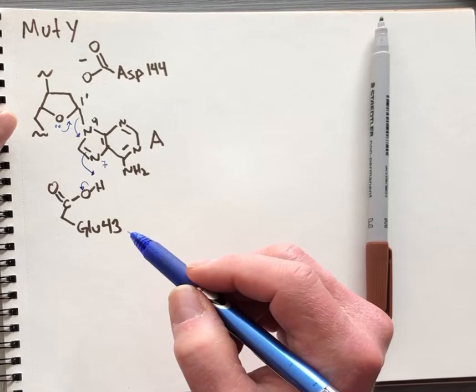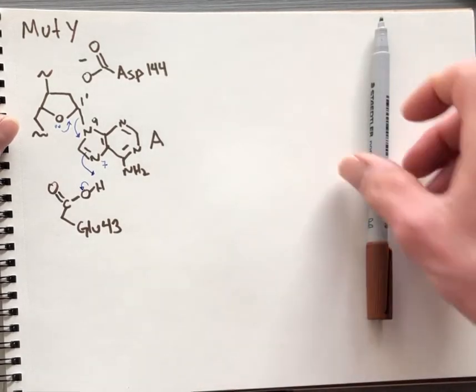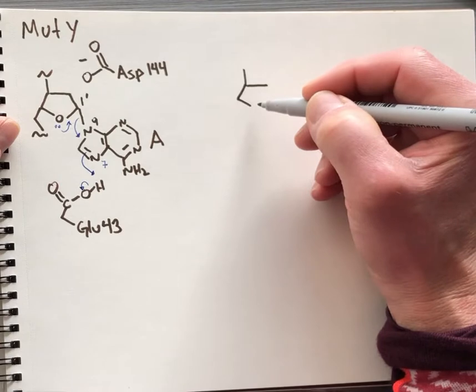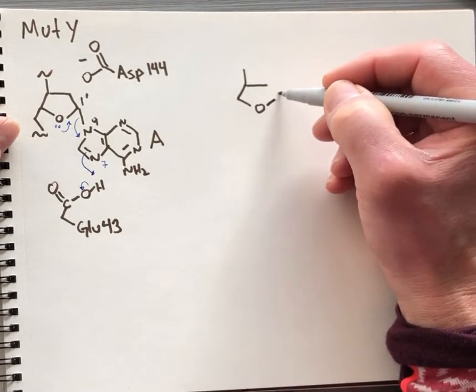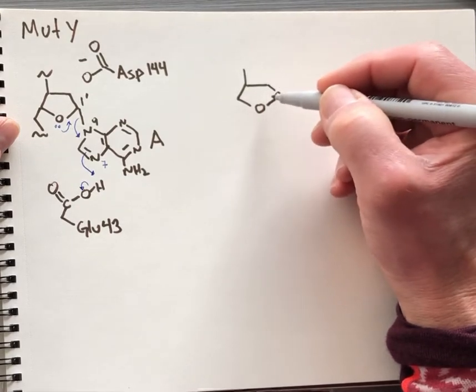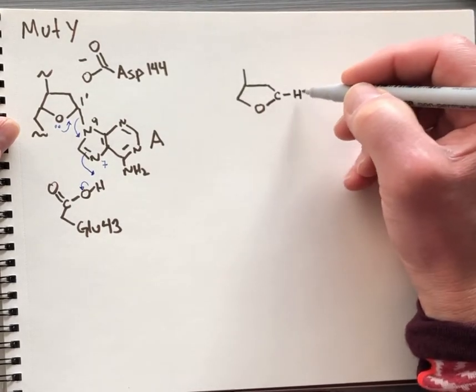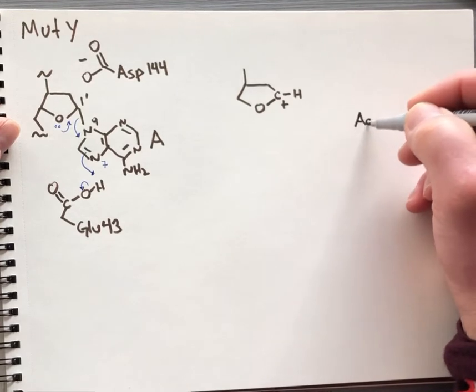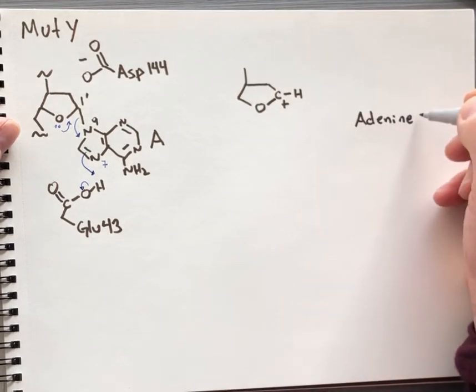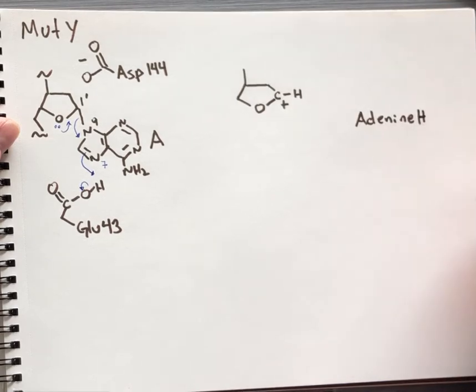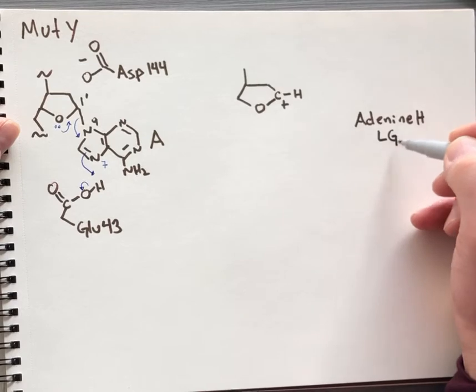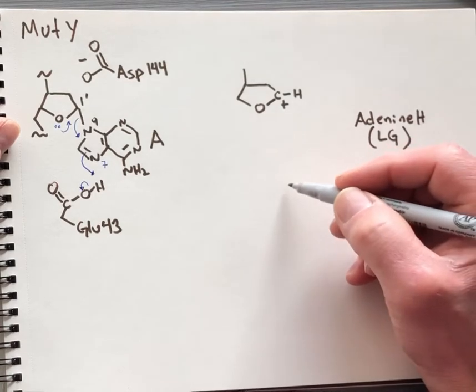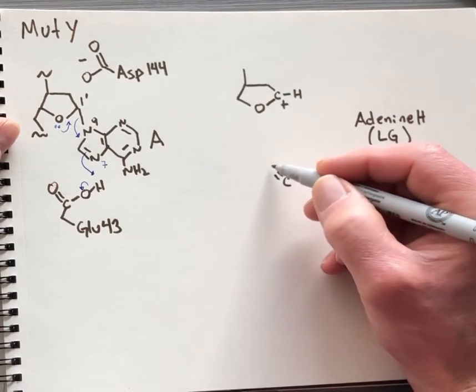What we create through this reaction is a highly unstable intermediate. We're going to draw its structure next. It has a positively charged carbon that's really only bonded to three things—very unstable. We've created the adenine free base after protonation, so we'll add the proton here. This is the leaving group in this SN1 type reaction.